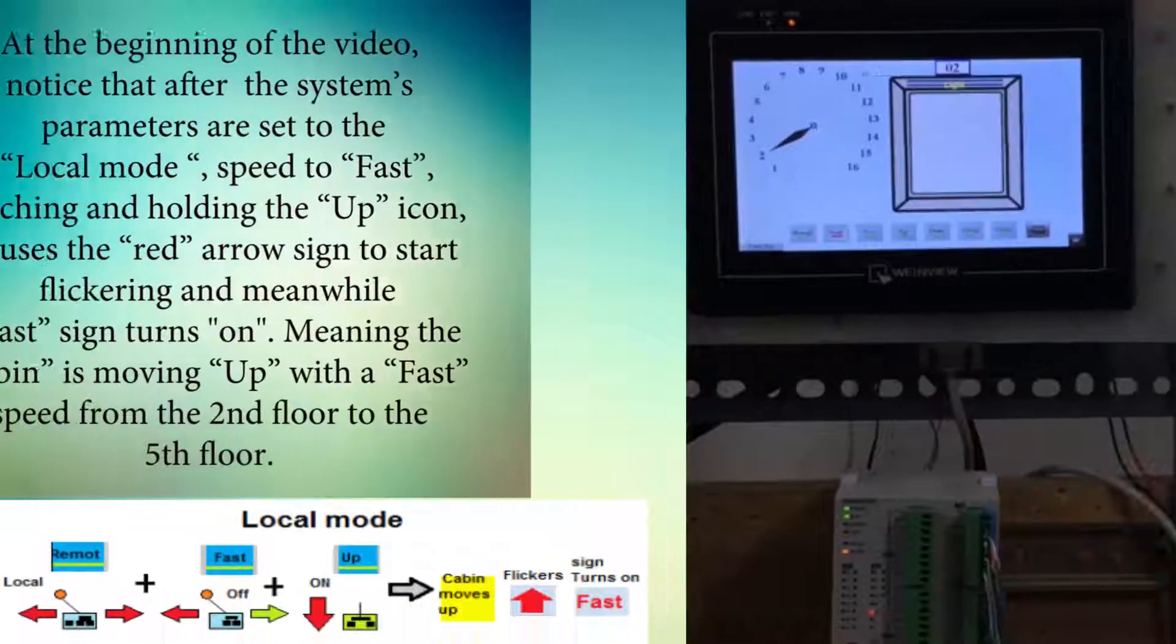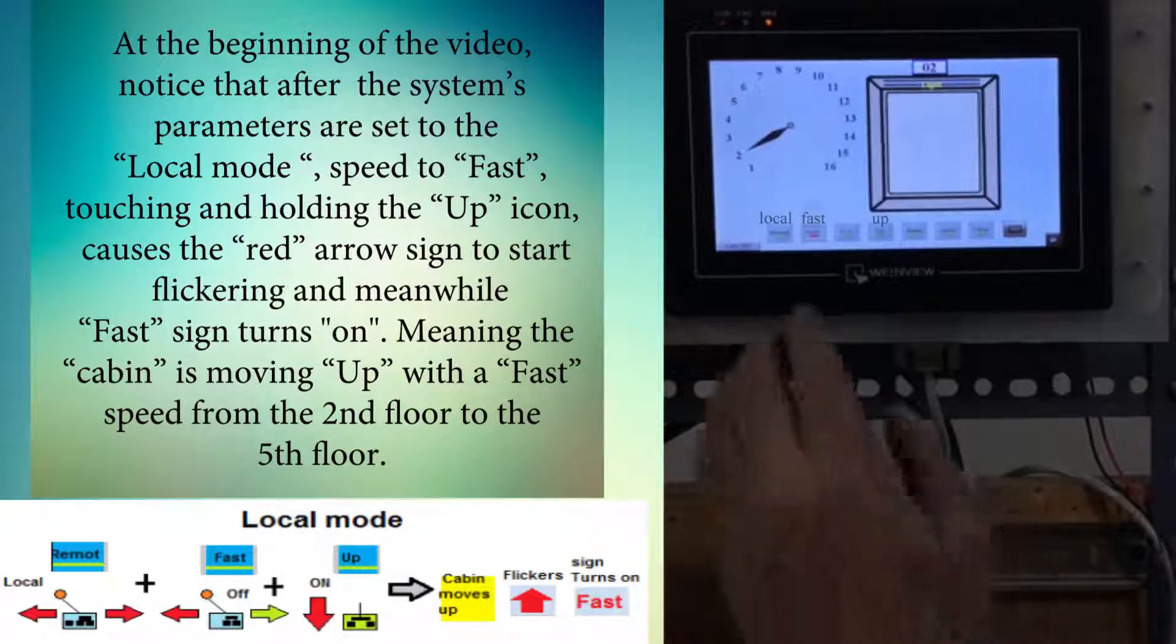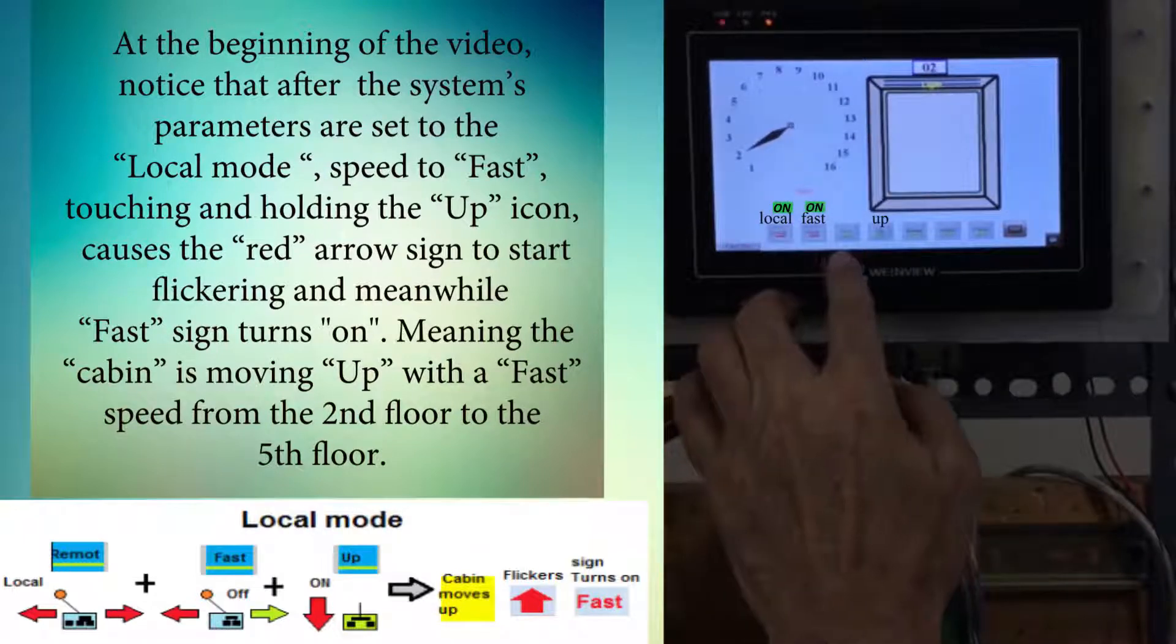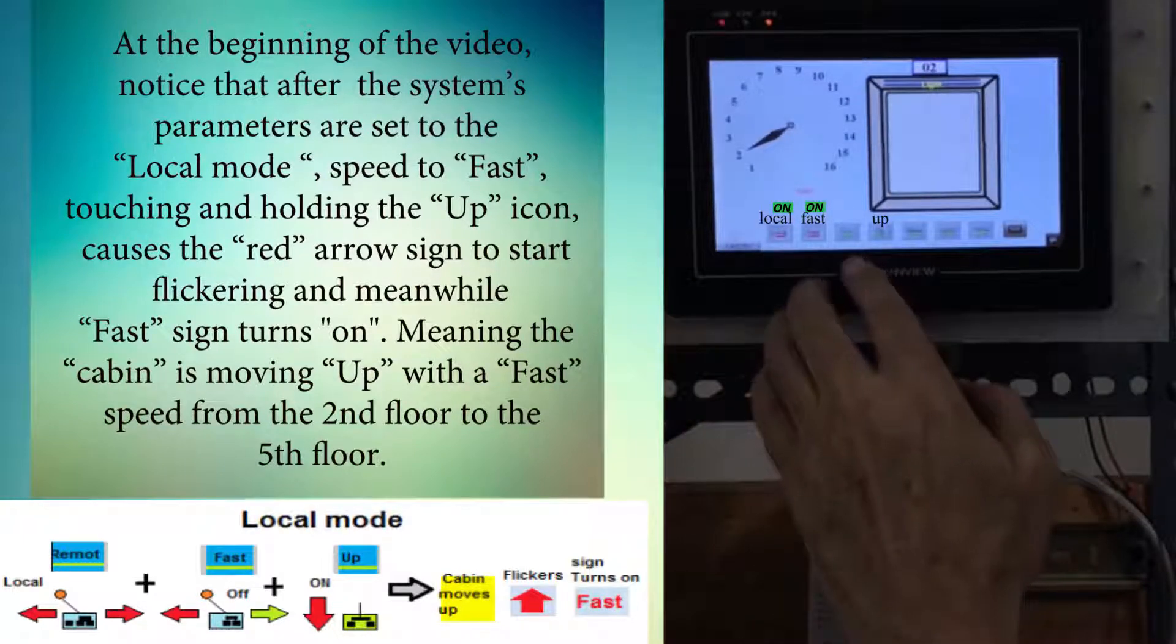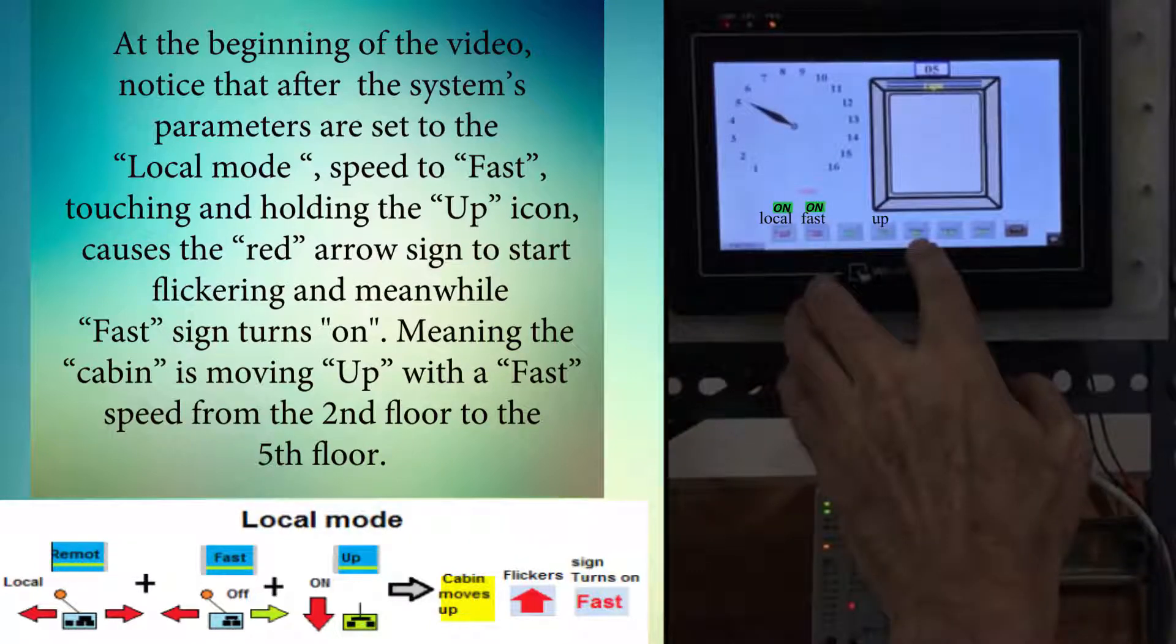At the beginning of the video, notice that after the system's parameters are set to local mode with speed set to fast, touching and holding the up icon causes the red arrow sign to start flickering. Meanwhile, the fast sign turns on, meaning the cabin is moving up with fast speed from the second floor to the fifth floor.